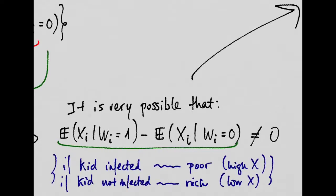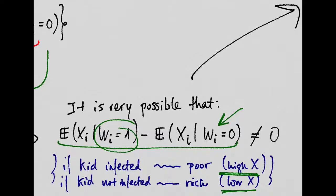Why? Well, imagine that if the kid is infected, it is more likely that he has a high X, that he has higher chances of being poor on expectations. And if he's healthy, we might expect him to have low X's on expectations, because on average, he's going to be a rich kid. Rich kids have better access to healthcare, better sanitation, and that will mean that kids that are not infected are, on average, richer.